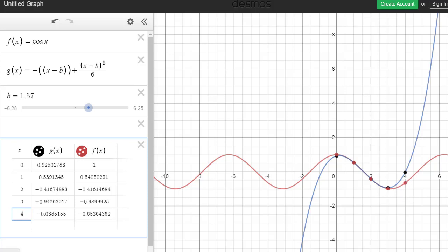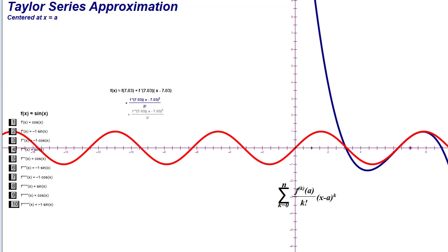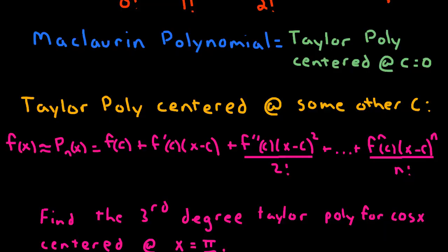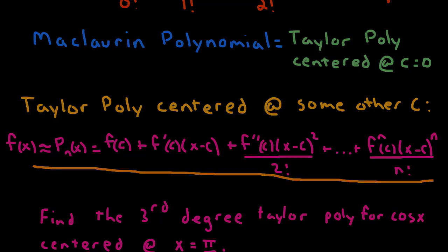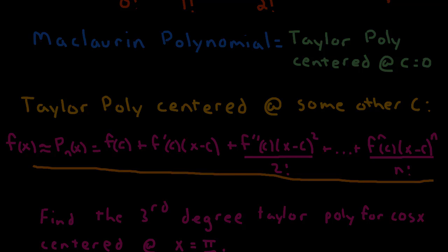So, to find a Taylor polynomial centered at any value other than 0, we simply defer to this right here. We simply defer to this little pattern right here. It's just like what we've been doing centered at 0, only this time we plug our center in here and we shift everything over by a factor of c. I hope that made sense to you. We'll see you around.